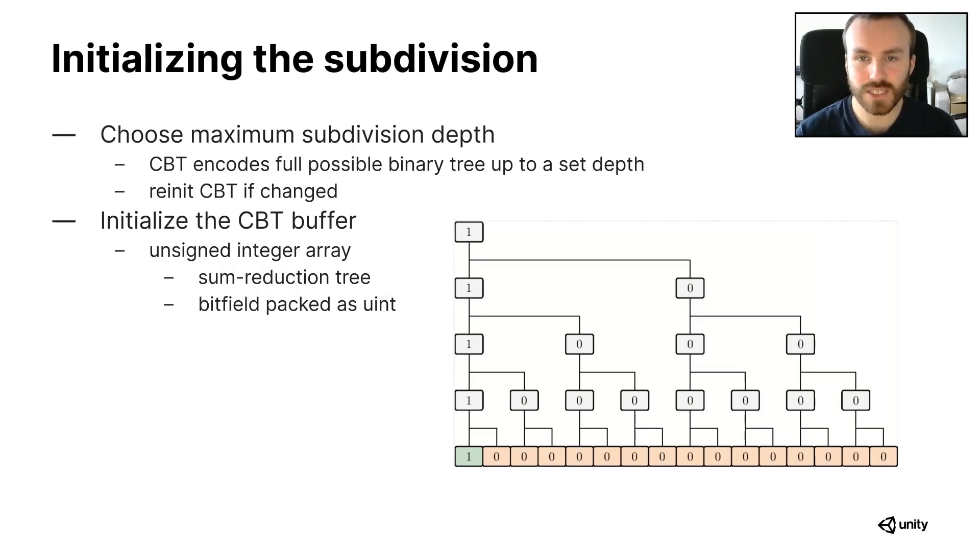Then the next thing to do is initializing a concurrent binary tree to its base state. To do that we first need to decide on the maximum subdivision depth, which corresponds to the maximum binary tree depth, and this dictates the size of the bitfield we want to allocate, and the max depth of the binary tree it can fully encode. And in practice, this will determine the maximum terrain resolution for a terrain of a certain size.